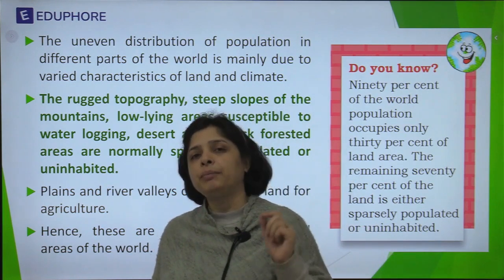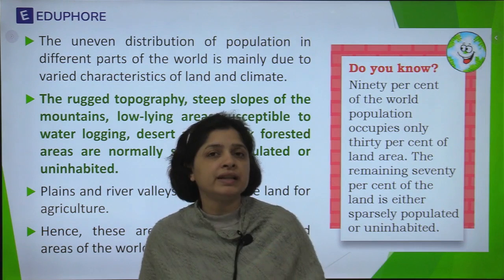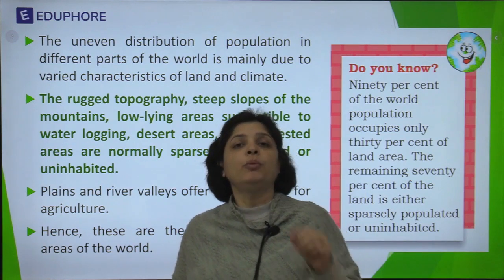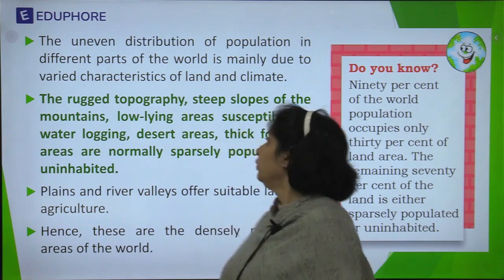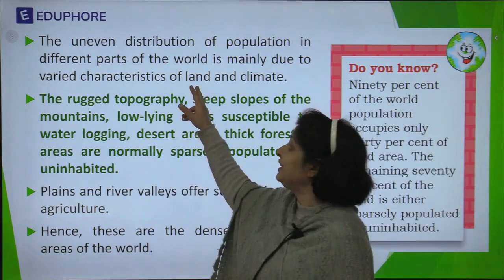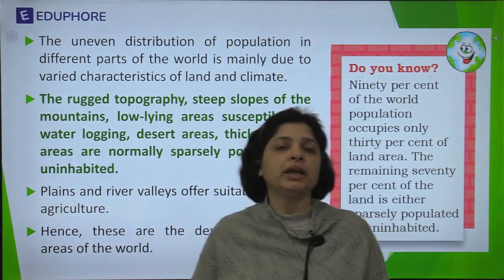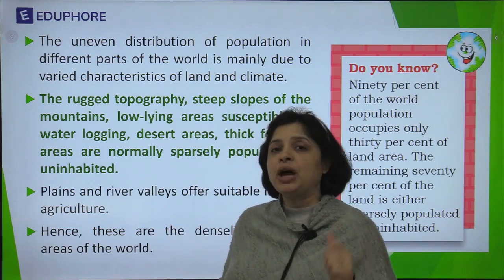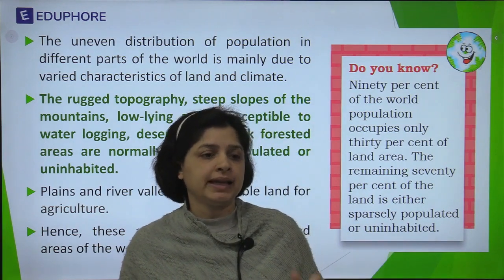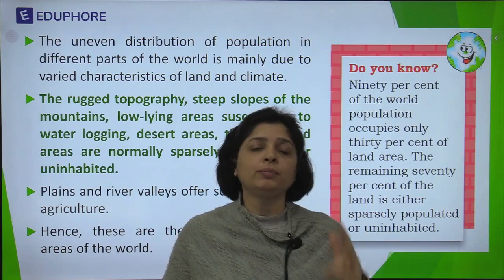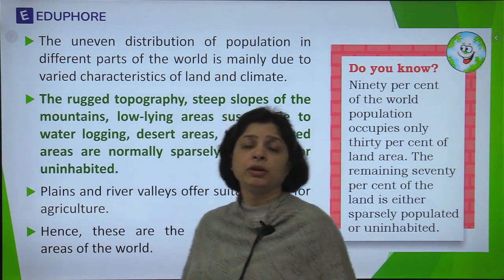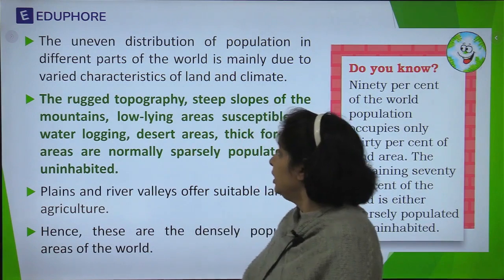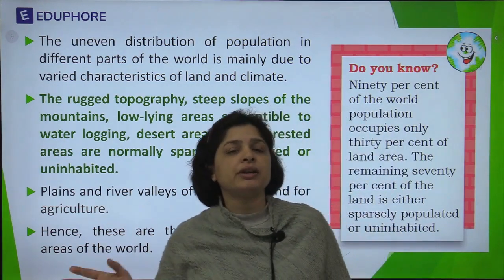Quality-wise, land is very different, and because of the differences in the quality of land as well as the overall conditions of nature, population is very unevenly distributed. Land and climate are the two key factors that affect population distribution worldwide. Areas with harsh conditions — rugged terrain, mountainous topography, rugged or dissected plateaus, steep slopes, barren land, low-lying flood-prone areas, or deserts — generally have much less population.